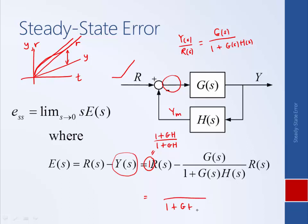We have a denominator of 1+GH and this common factor R. And here we have a numerator of 1+GH subtracting a numerator of G.